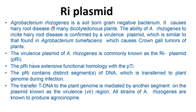Agrobacterium rhizogenes is a soil-borne gram-negative bacterium that causes hairy root disease in many dicotyledonous plants. Its ability to produce hairy root disease is conferred by the virulence plasmid, similar to that found in Agrobacterium tumefaciens which causes crown gall tumors. The virulence plasmid of Agrobacterium rhizogenes is known as the Ri plasmid, which has extensive functional homology with the Ti plasmid. The Ri plasmid contains a distinct segment of DNA transferred to the plant genome during infection, mediated by the virulence region.